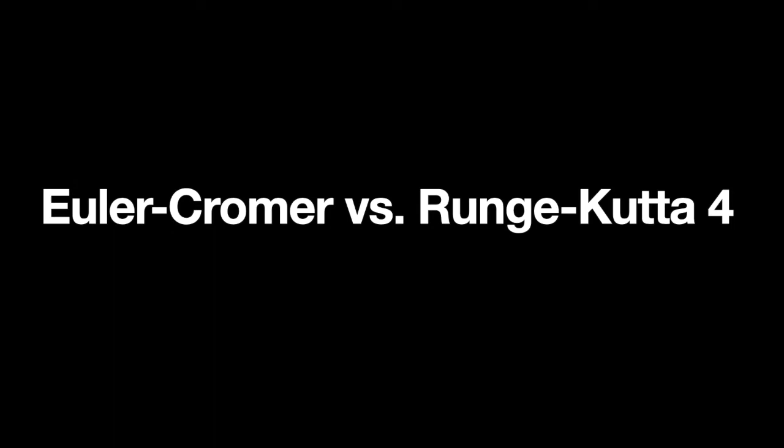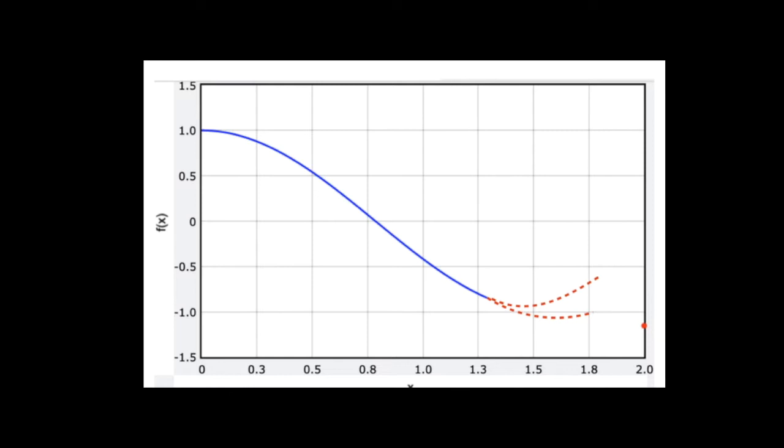I do a lot of numerical calculations, breaking things into small steps, and someone brought up that my method's too easy. So I'm going to show you two methods for finding updated numerical calculations in mechanics: the Euler-Cromer and the Runge-Kutta 4th order. Let's just get into it.